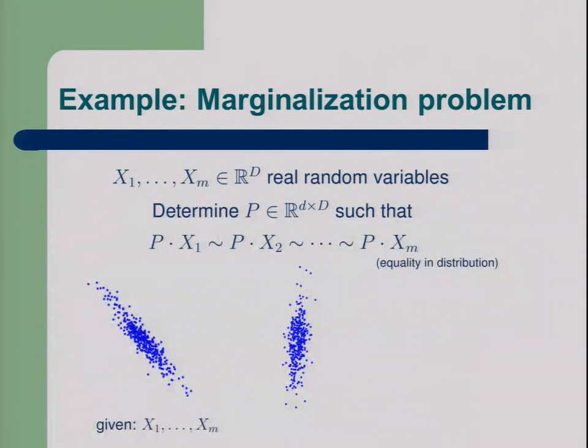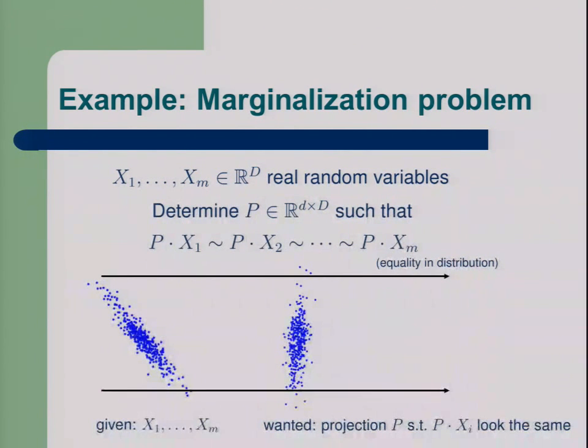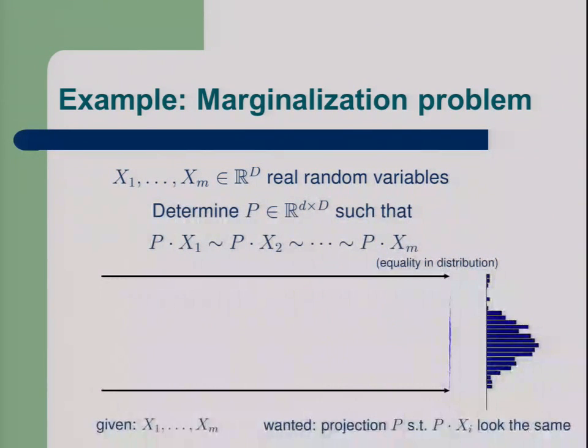In difference to LDA, where we are looking for a projection which makes them look most discriminative, we are now looking for a projection which makes those classes, the samples from those random variables, as similar as possible. And on this example, I will demonstrate how with some algebraic tricks, you can construct an estimator to solve this problem.